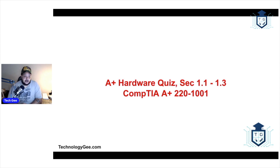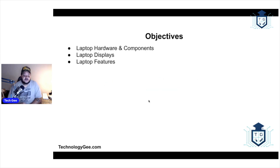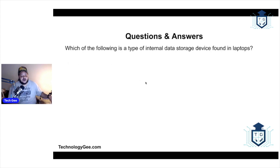Out of everybody who took the A+ hardware test, we got a class average of 65%. You need at least a 75 to pass, so if you got a 75, shout out to you. This quiz was for A+ hardware — all those videos are in my playlist. This is for the 220-1001 exam, but the same information applies to the newer A+ exams, the 1101 and 1102. Sections covered were 1.1, 1.2, and 1.3: laptop hardware components, laptop displays, and laptop features.